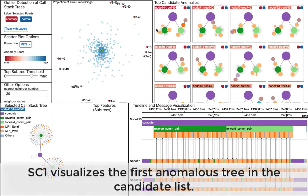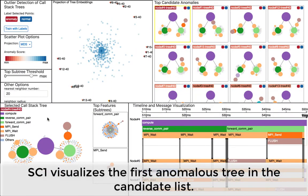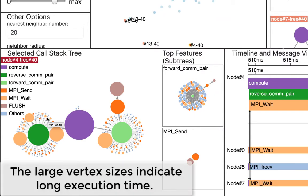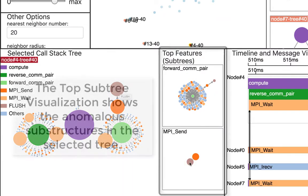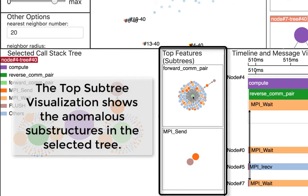He chooses another tree, which is the most anomalous one from the candidate list. There are some vertices with large sizes, indicating the long execution times. The top subtree visualization shows the subtrees which make this tree anomalous.